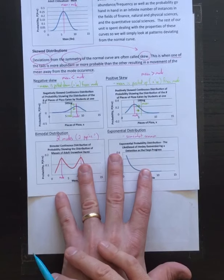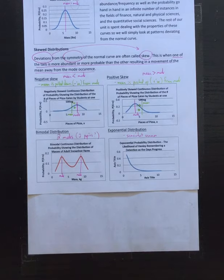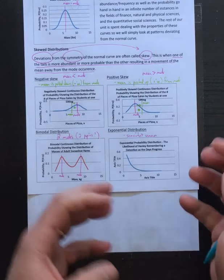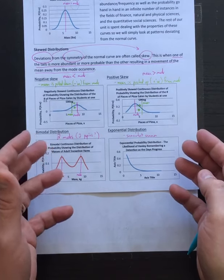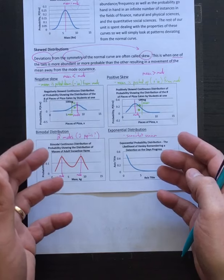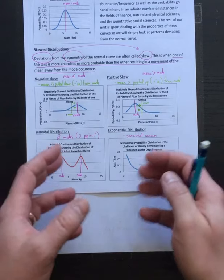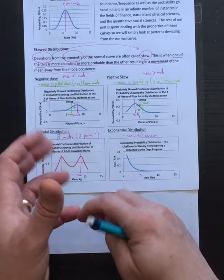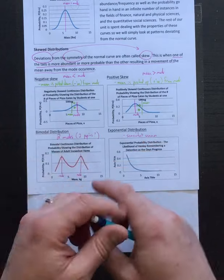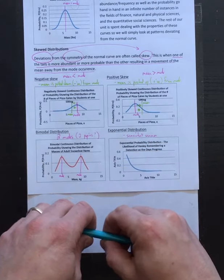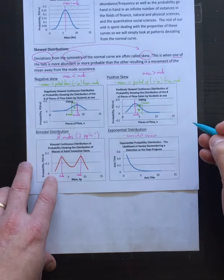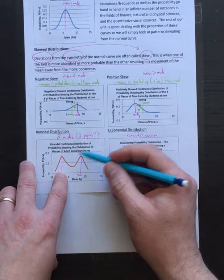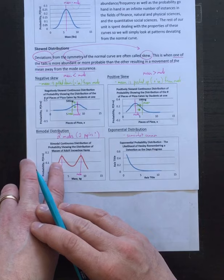Another example is a bimodal distribution, which is often seen in sexually dimorphic populations or populations with two distinct groupings. Sexual dimorphism is a good example - a male gorilla is huge and the female is more gracile. A peacock has huge tail feathers while the peahen has normal-looking feathers. You see two distinct groups, two bumps - that's why it's bimodal.